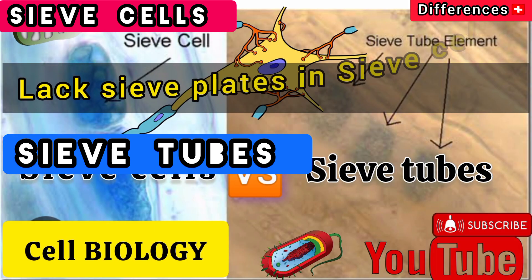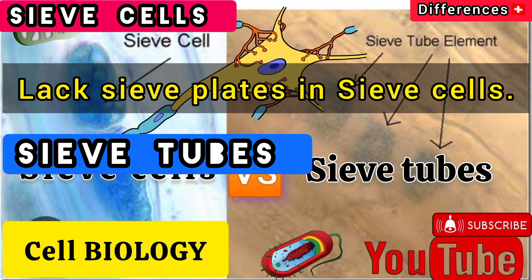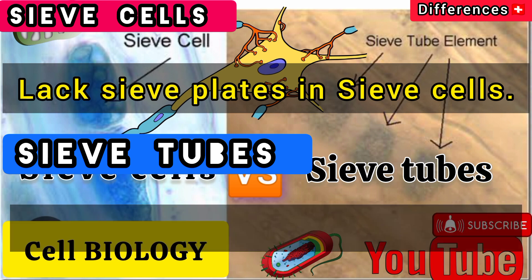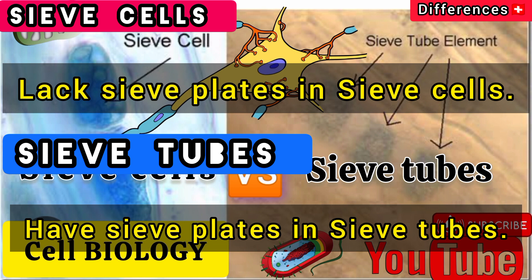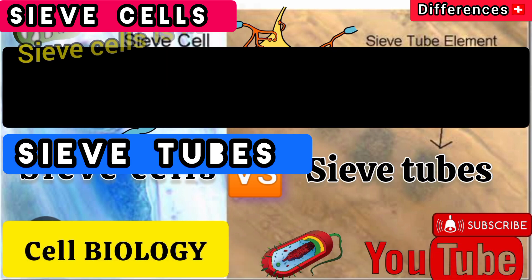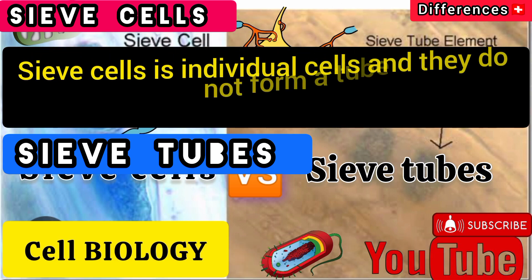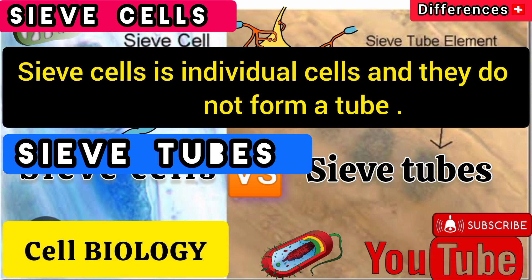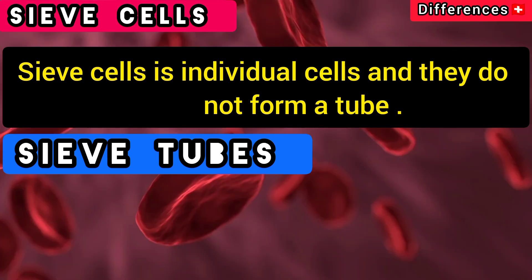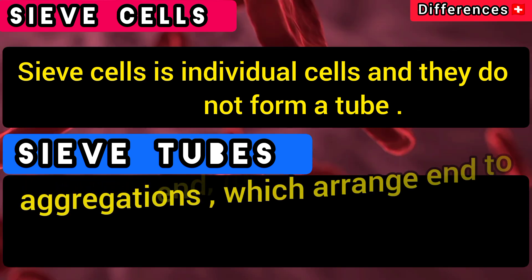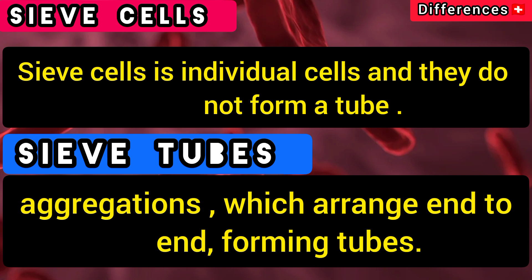Sieve plates are lacking in sieve cells, while sieve tubes have sieve plates. Sieve cells are individual cells and they do not form a tube, whereas sieve tubes are aggregations arranged end to end forming tubes.